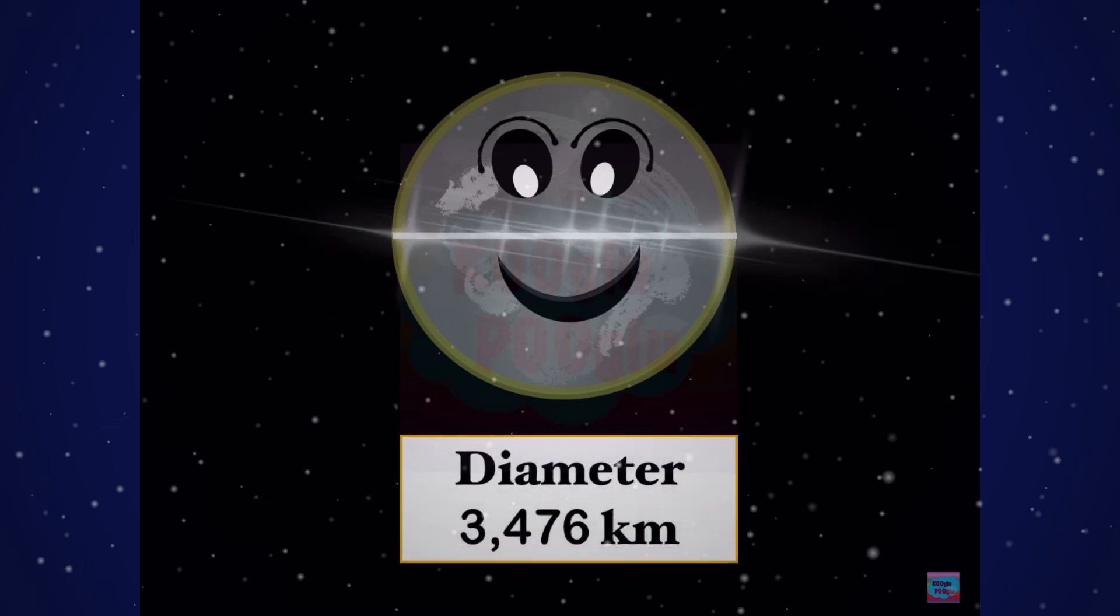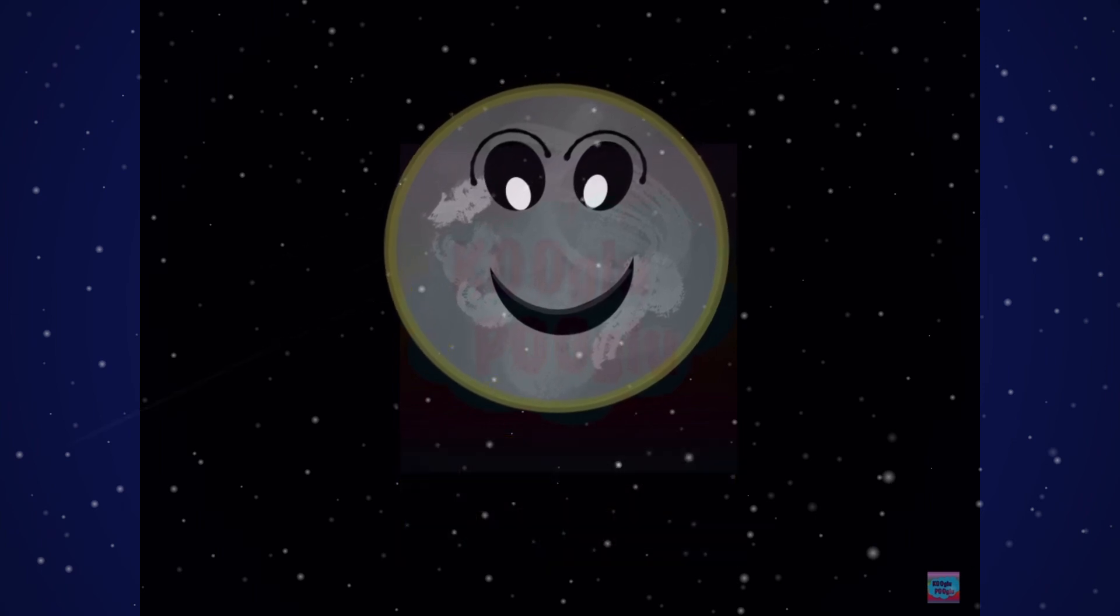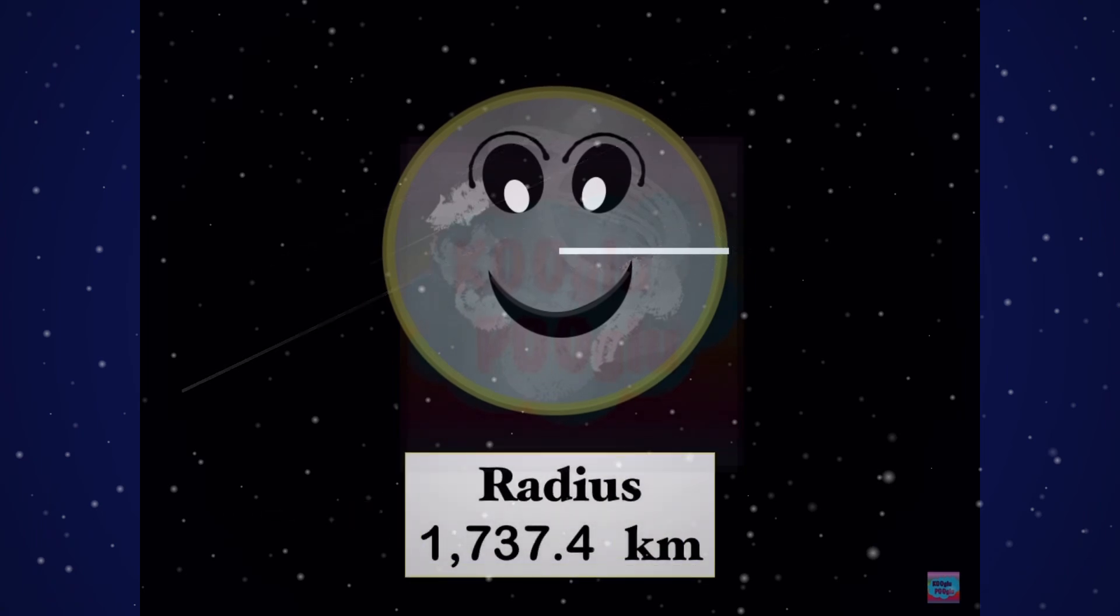The diameter of the Moon is 3,476 kilometers, and the radius is 1,737.4 kilometers.